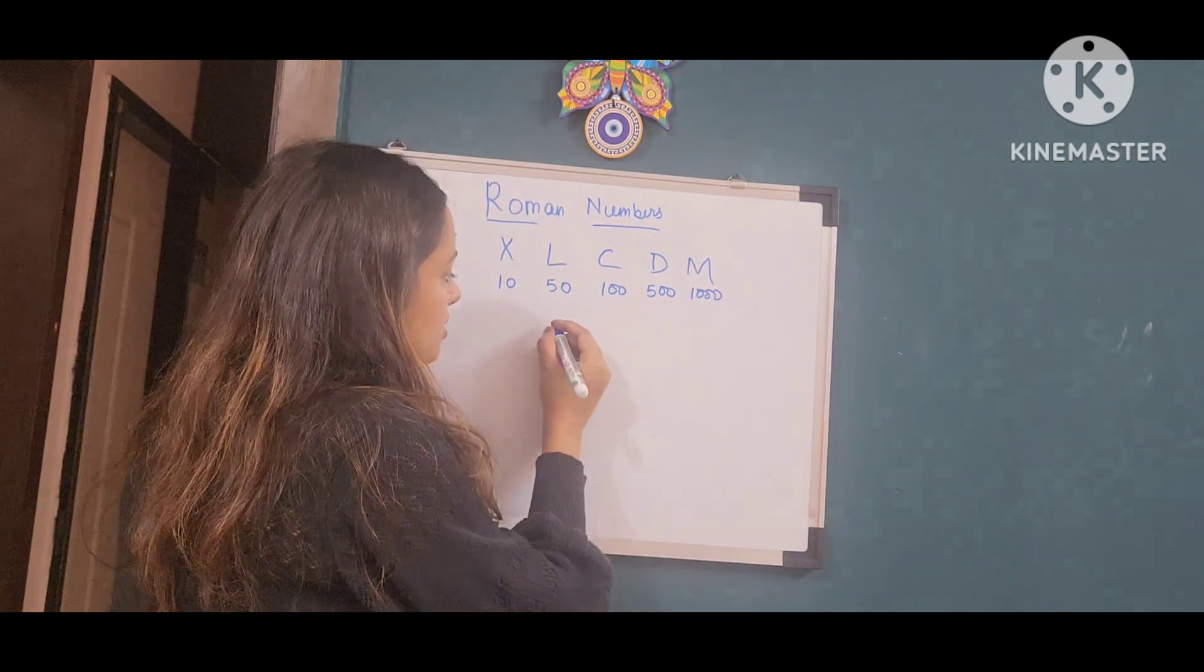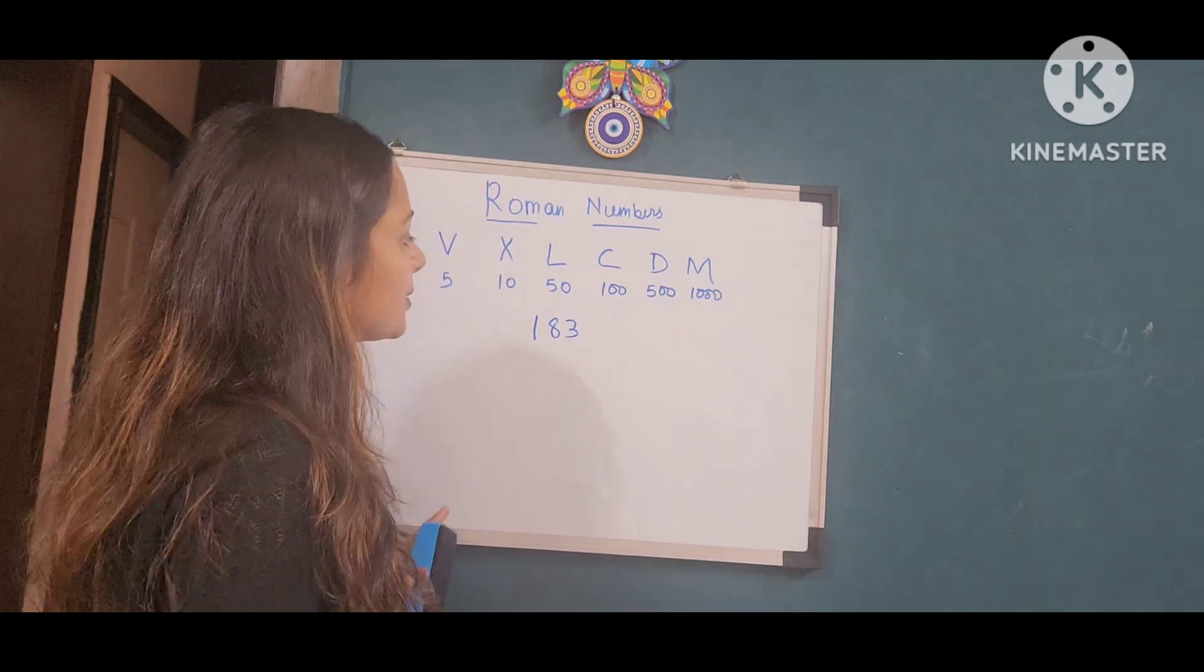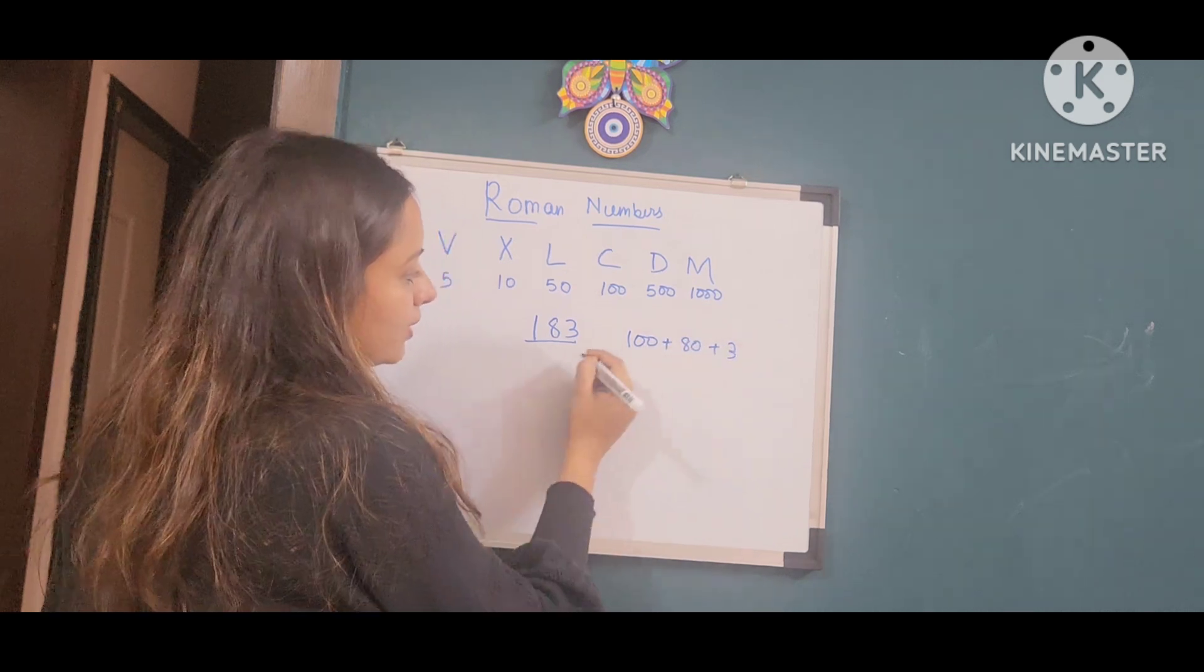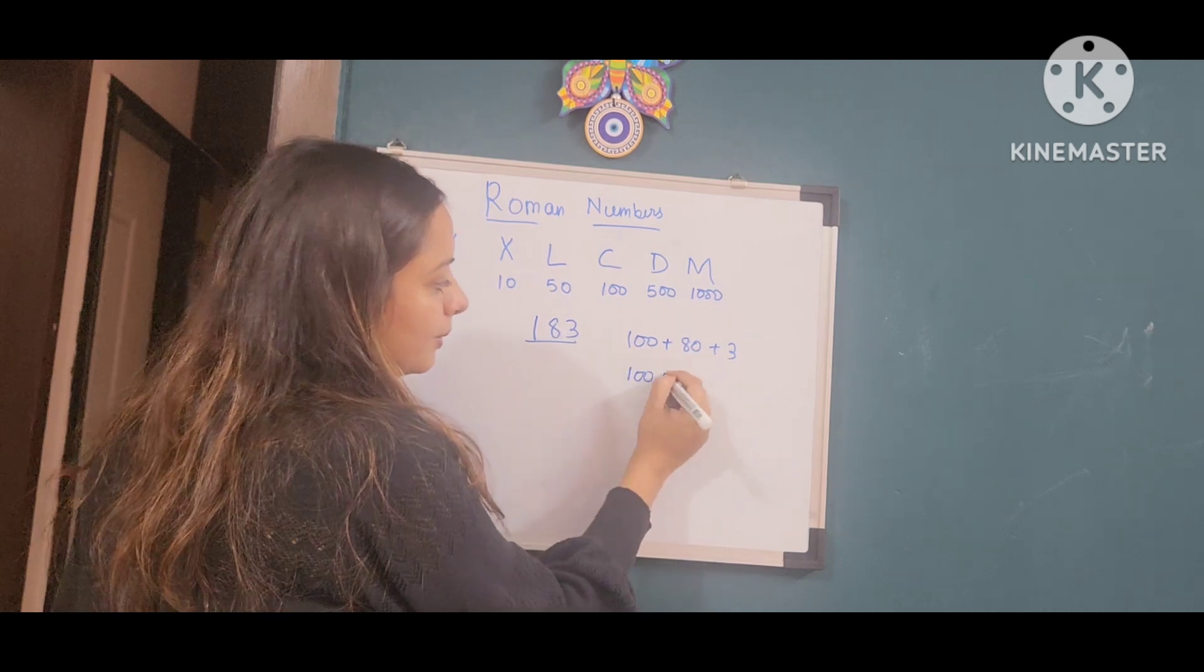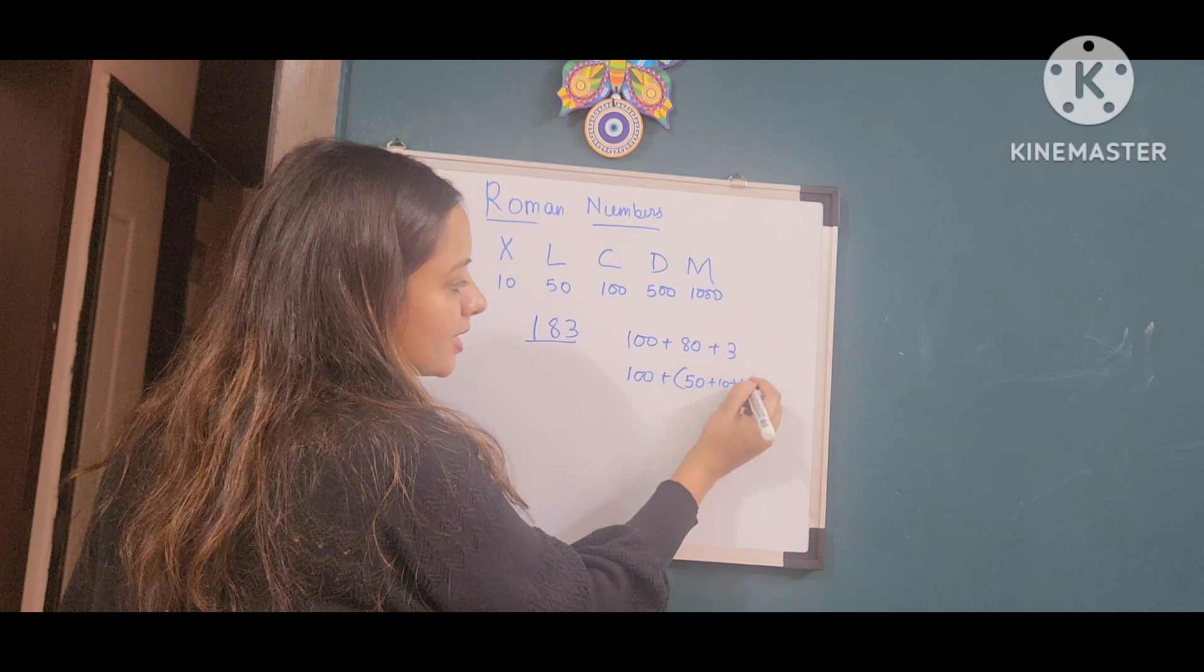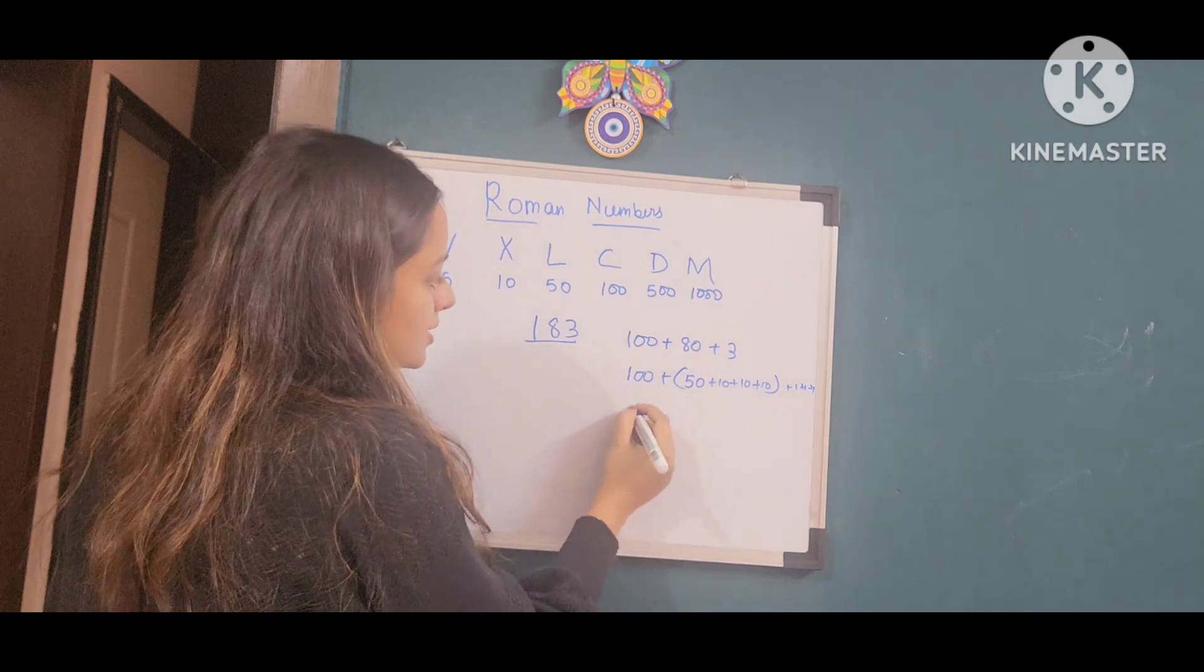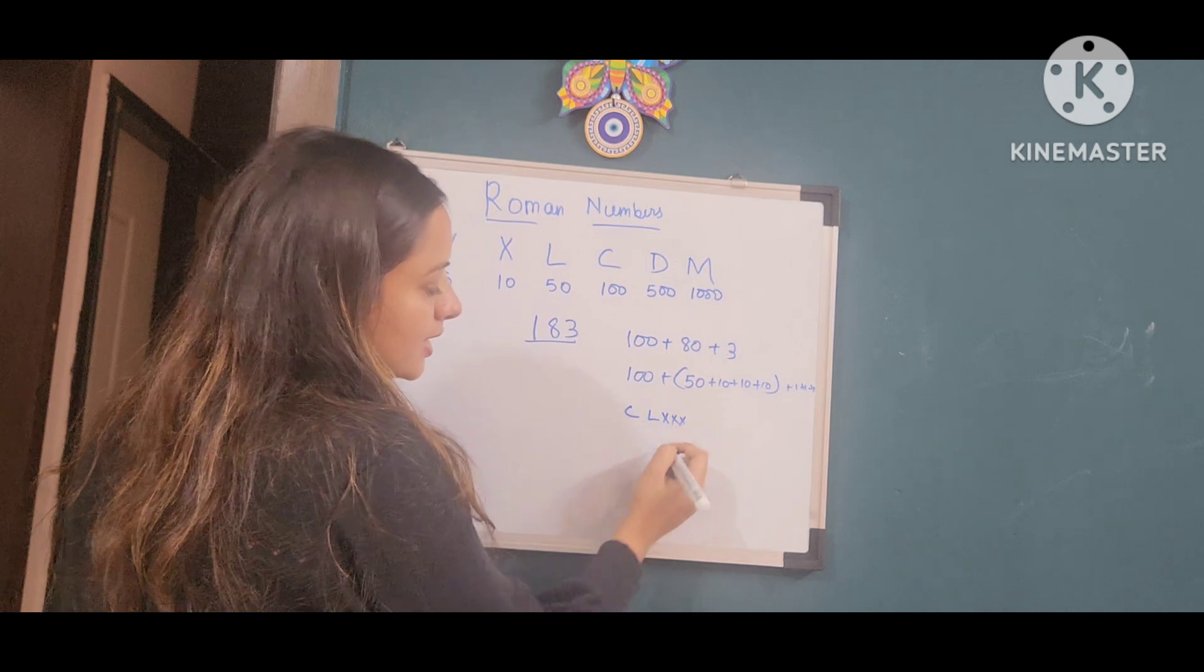Suppose we have the number 183. How do we write 183 in Roman numbers? First, we break 183 into 100 plus 80 plus 3. 100 is C. We break 80 further into 50 plus 30. 50 is L and 30 is three times X, that is XXX.